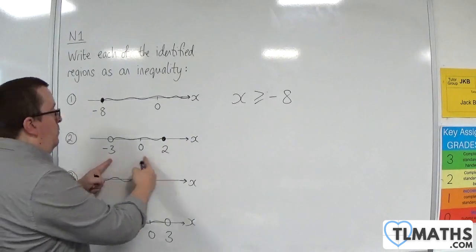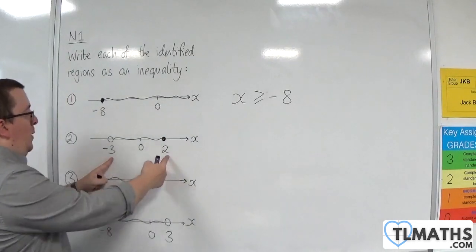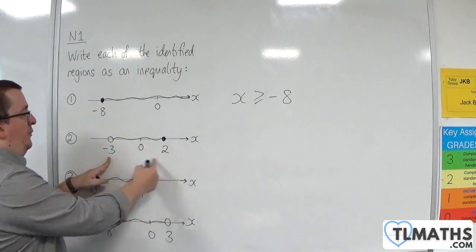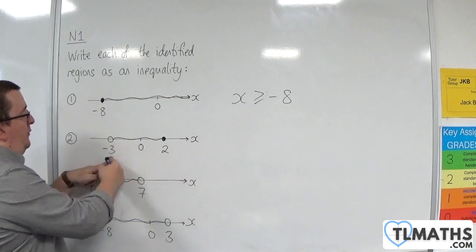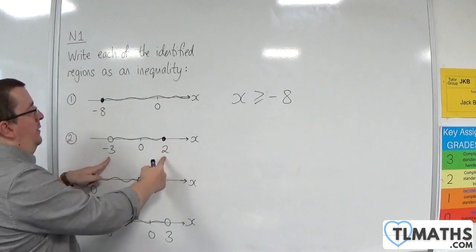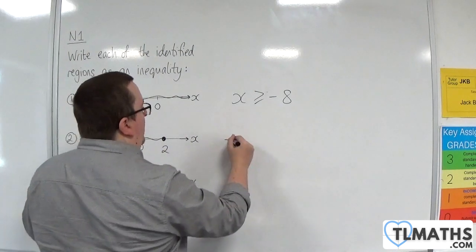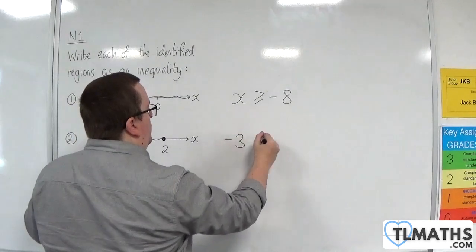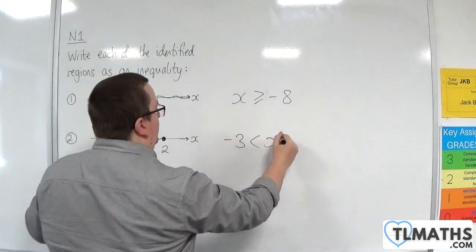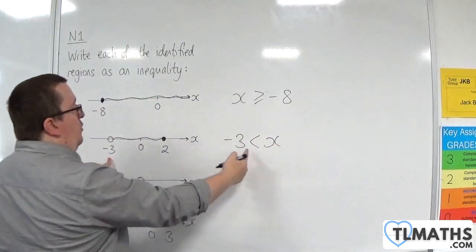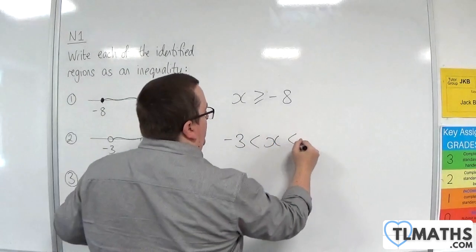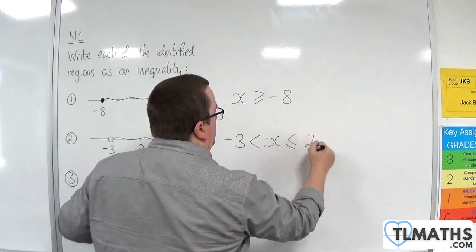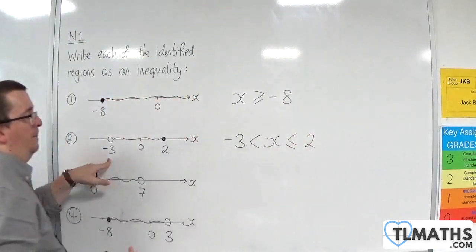Now for this next one, we've got a region between minus 3 and 2. Minus 3 is not included, 2 is. So we'll have minus 3 is less than x — not included — which is less than or equal to 2, included.